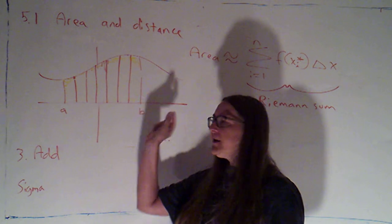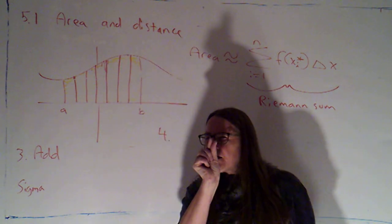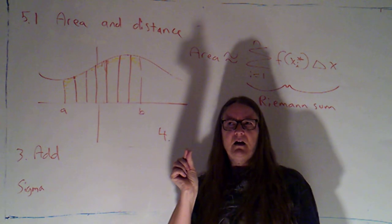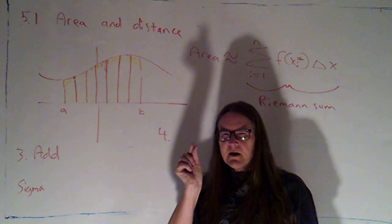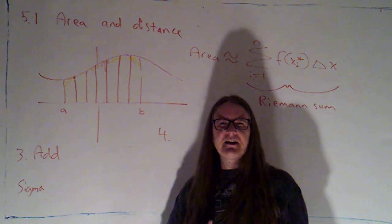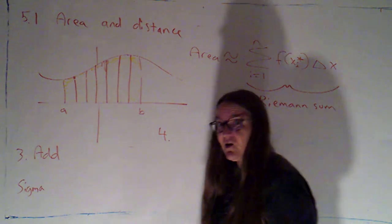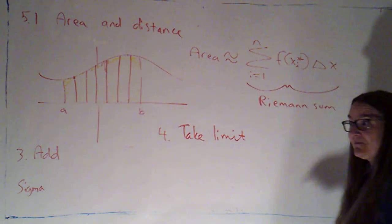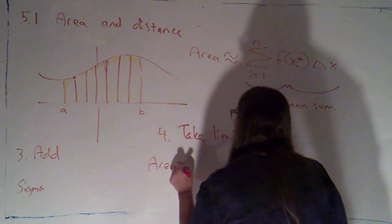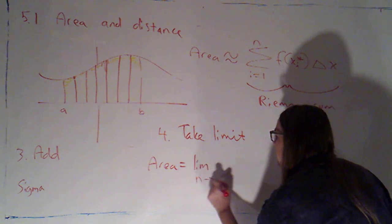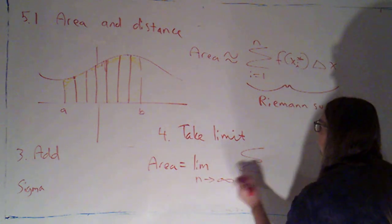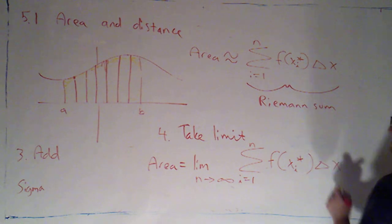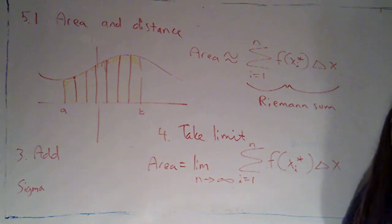So, what I want is I want the width of each piece to get really, really, really close to zero without actually getting there. Now, have we seen in this class a way of having something get really, really close to something without actually getting there? We have. It's called a limit. Okay. So, I'm going to take the limit of my Riemann sum and the exact area will equal the limit as n goes to infinity of the sum as i goes from 1 to n of f of xi star times delta x. It's the limit of my Riemann sum.